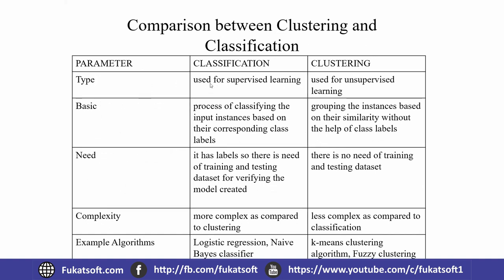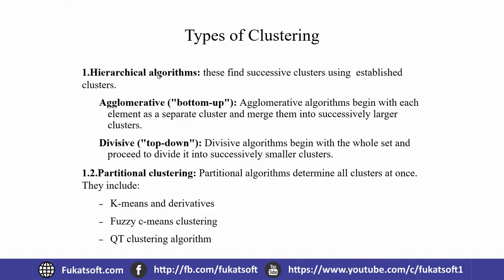In comparison, classification uses labels while clustering operates without labels. Clustering requires no training or testing data. In terms of complexity, classification is more complex in space and time, while clustering is less complex. An example algorithm for classification is logistic regression.